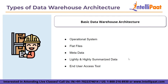The first is basic data warehouse architecture, which consists of operational systems, flat files, metadata, lightly and highly summarized data, and end-user access tools. Operational systems handle an organization's daily transactions. Flat files are a group of data describing other data — every file in a flat file system must have a unique name, and it stores transactional data.